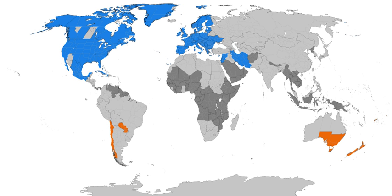Benjamin Franklin published the proverb 'Early to bed and early to rise makes a man healthy, wealthy, and wise,' and he published a letter in the Journal de Paris during his time as an American envoy to France, suggesting that Parisians economize on candles by rising earlier to use morning sunlight. This 1784 satire proposed taxing window shutters, rationing candles, and waking the public by ringing church bells and firing cannons at sunrise. Despite common misconception, Franklin did not actually propose DST.